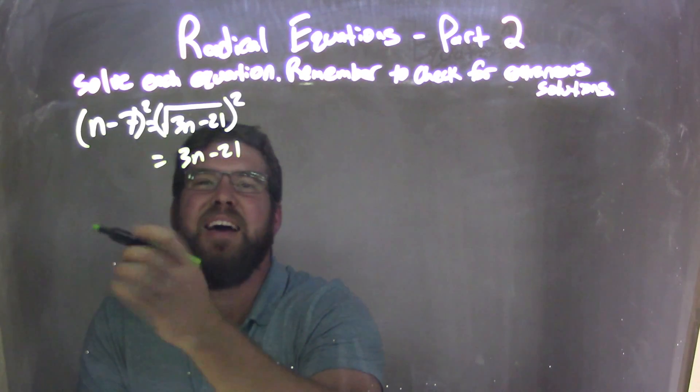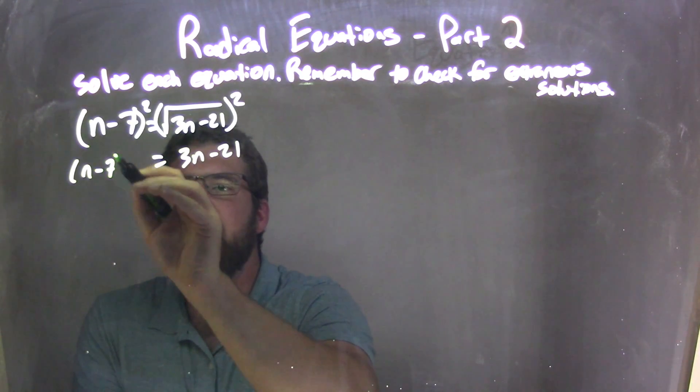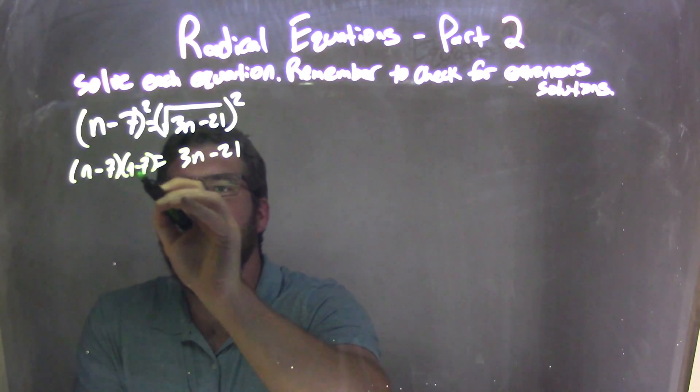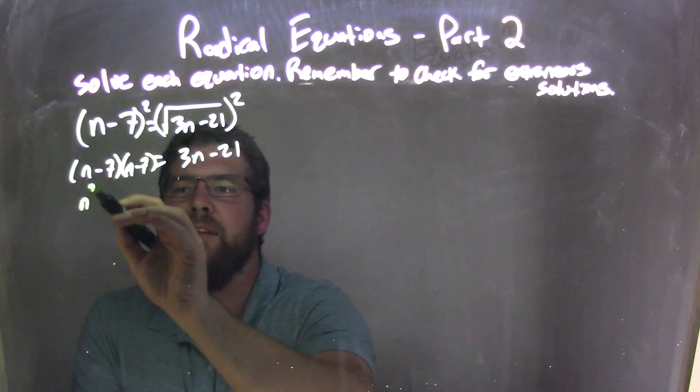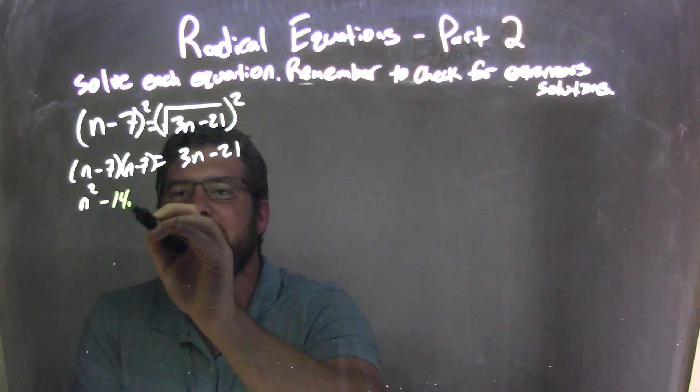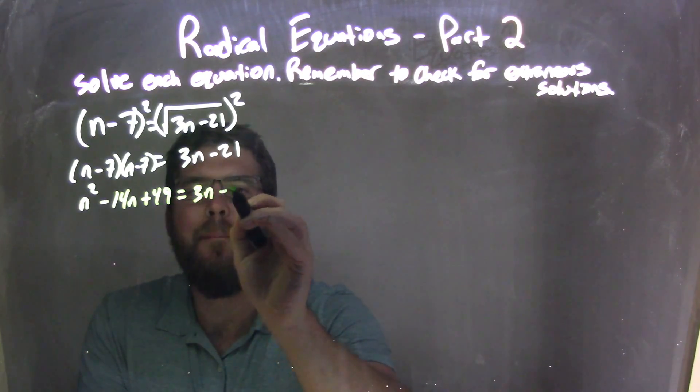But on the left side, if we needed, we'll do that step here. n minus 7 squared is really this n minus 7 times n minus 7. Now when I distribute that out, that becomes n squared minus 14n plus 49 equals 3n minus 21.